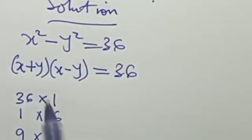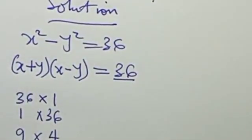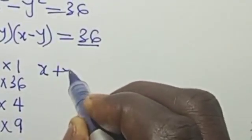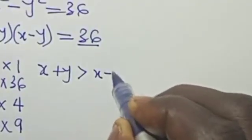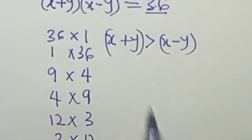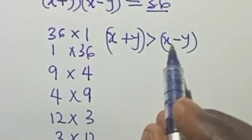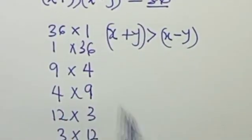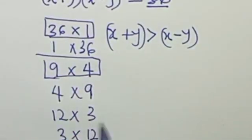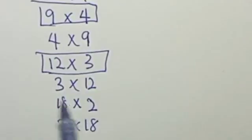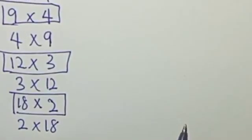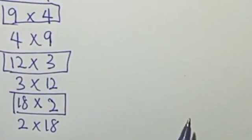And since 36 is a positive number, it therefore means that x+y is greater than x-y. So that shows that the first number will always be greater than the second number. That means 36×1, 9×4, 12×3, and 18×2 are the only true cases for this equation.